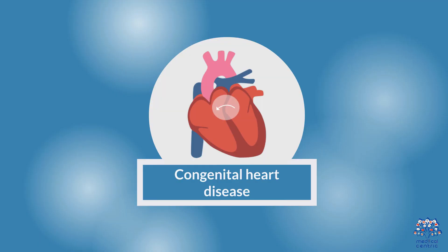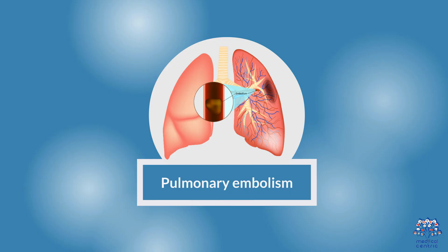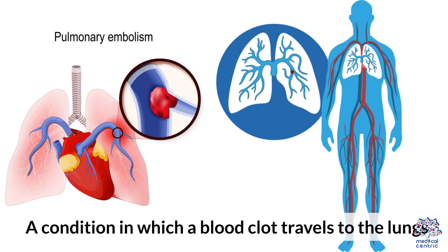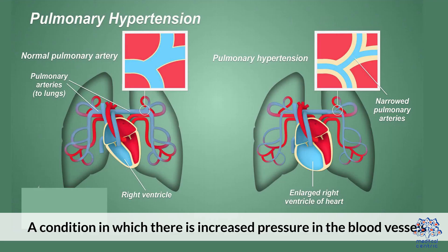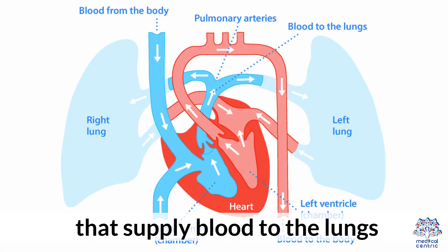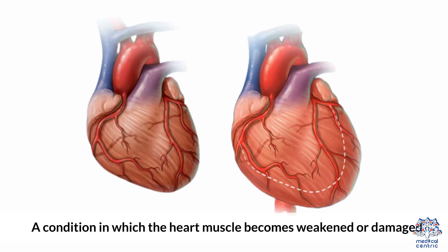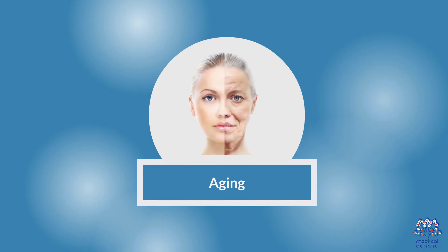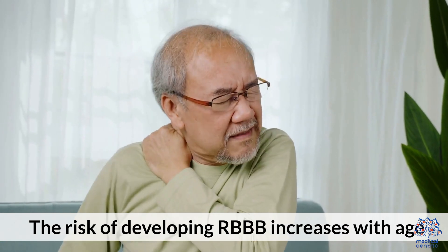Congenital heart disease, a condition in which the heart does not form properly before birth. Pulmonary embolism, a condition in which a blood clot travels to the lungs. Pulmonary hypertension, a condition in which there is increased pressure in the blood vessels that supply blood to the lungs. Cardiomyopathy, a condition in which the heart muscle becomes weakened or damaged. Aging — the risk of developing RBBB increases with age.